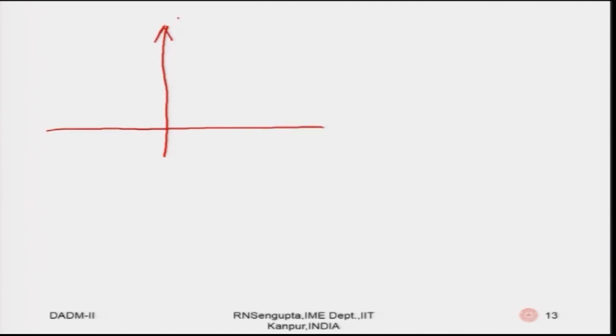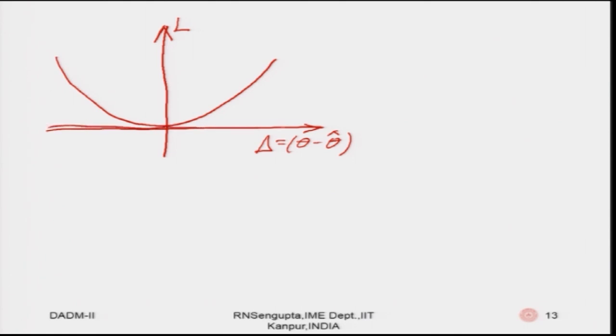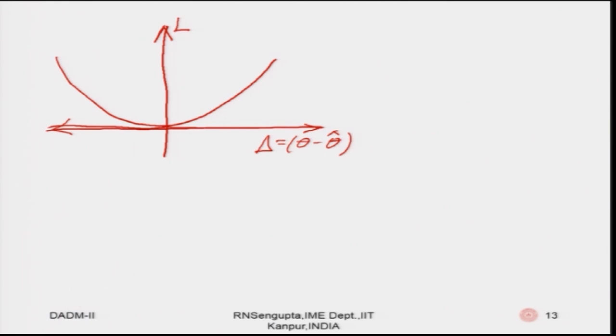For the quadratic loss function, the y-axis is the loss function denoted by L and the x-axis is delta, where delta is basically the difference between the estimate and the actual value. For the Lin-Lin loss function, using another color — say green — with equal penalization, this is a 45-degree line on both sides. So technically they are equally penalized.